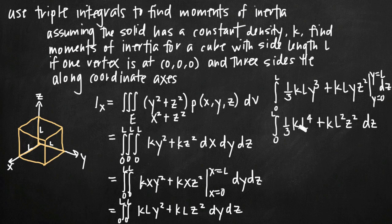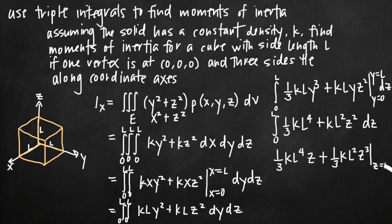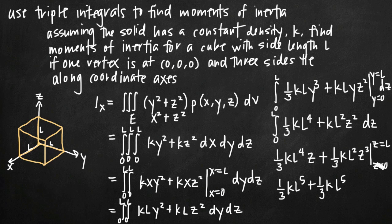Finally, integrating with respect to z, we get (1/3)kl⁴·z + (1/3)kl²z³, evaluated from z = 0 to z = l. Plugging in z = l gives (1/3)kl⁴·l + (1/3)kl²·l³, which is (1/3)kl⁵ + (1/3)kl⁵. Plugging in z = 0 gives 0. Combining these two terms, the moment of inertia about the x-axis is 2/3 · k · l⁵.